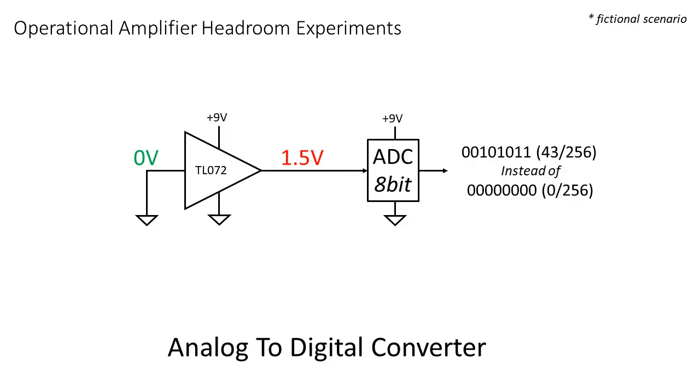The same happens when interfacing an op-amp with an analog to digital converter, or ADC. The output will never reach 0 volts, so the ADC will always think there is something. And if your microcontroller program isn't aware of that, you might get some unexpected results.